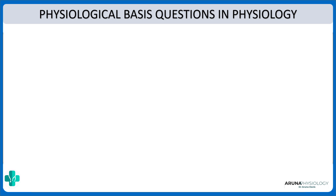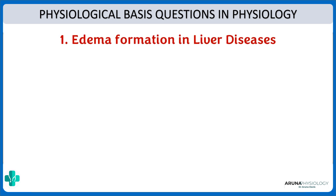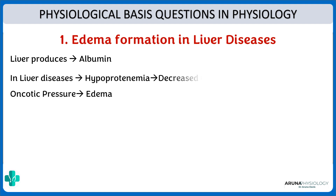First, we are going to discuss why there is edema formation in liver disease. This is pretty straightforward. We know that the liver produces albumin, and in liver diseases there is hypoproteinemia, which in turn causes decreased capillary oncotic pressure, which in turn causes edema.